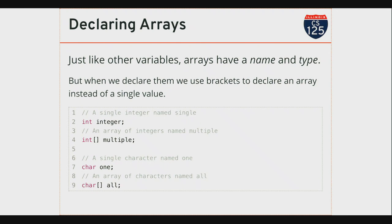I can do this with all of the Java primitive types. Down here I've created an array of characters. On line seven I'm declaring a variable called 'one' that stores a single character. On line nine I'm declaring a variable called 'all' that stores an array of characters. This bracket syntax is how I tell the computer this variable is not just storing a single value — it's going to store more than one value.